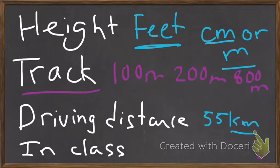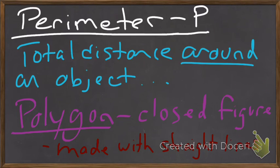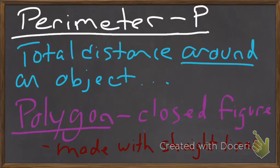In class, most of the time we're going to be using centimeters or meters. So perimeter is the total distance around an object. Most of the time we're going to be measuring polygons. Polygons are closed figures that are made with straight lines. Examples of polygons: squares, rectangles, triangles, parallelograms, trapezoids. We're going to look at all of these things at one point or another.